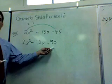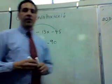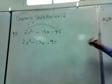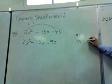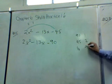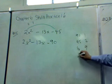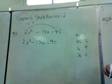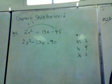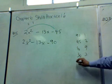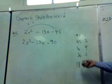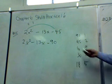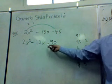Now we look for the factors of 90 that subtract to be 13. Let's see what we can find. 90 and 1, 45 and 2, okay, 10 and 9. What else is there? 30 and 3. There's a whole bunch of them. 18 and 5, right? And remember, what are we looking for when you're looking for all these factors? We're looking for the factors of 90 that subtract to be 13.